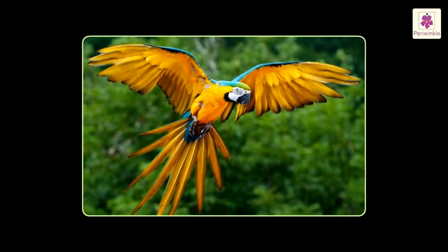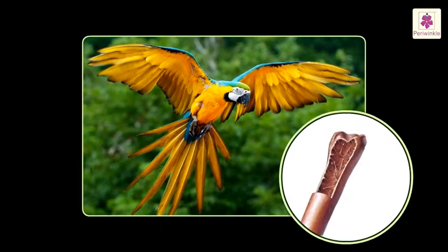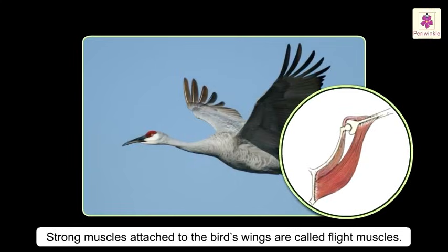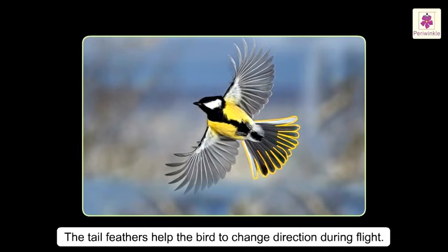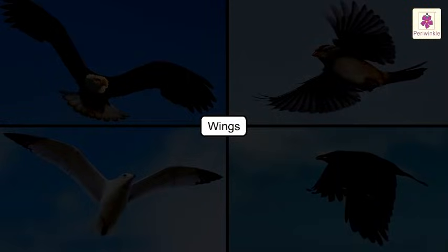These feathers are attached to hollow bones. There are strong muscles attached to the bird's wings, which are called flight muscles. The tail feathers help the bird to change direction during flight.